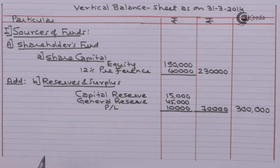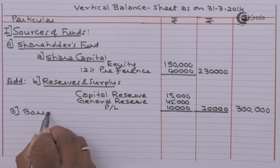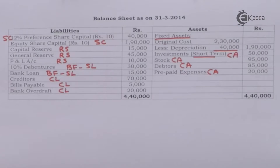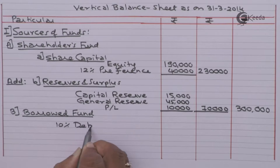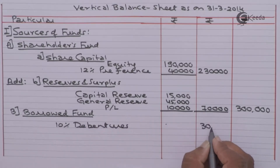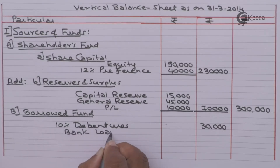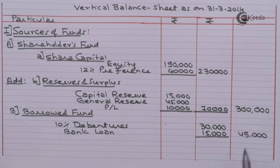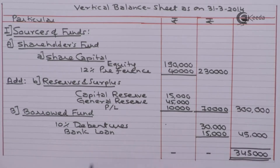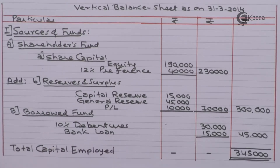Next we have borrowed funds: 10% debentures 30,000 and bank loan 15,000. Adding shareholders' funds and borrowed funds gives total capital employed of 3,45,000.